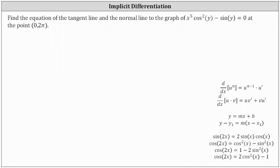Remember, the normal line is perpendicular to the tangent line at the point of tangency. So we begin by differentiating both sides of the equation with respect to x. I'm going to write cosine squared y as the square of cosine y to make it easier to differentiate. If we have a function of y, we have to apply the chain rule, and we'll have an extra factor of dy/dx.